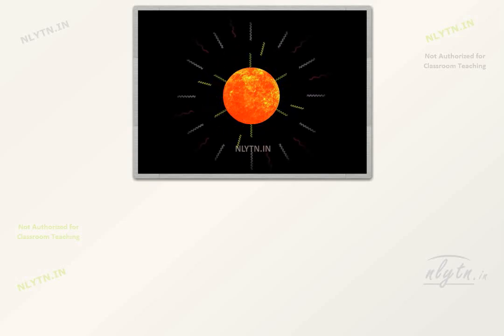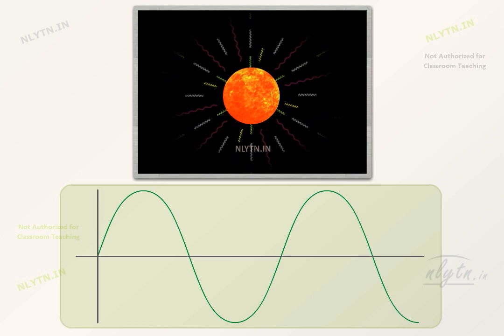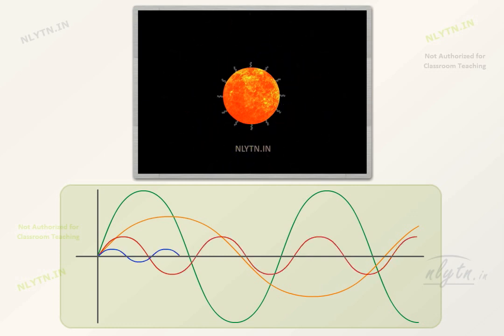We have discussed that every object above 0 kelvin emits thermal radiations in the form of electromagnetic waves. And these radiations do not happen at a single wavelength. Instead, the radiation consists of waves of all wavelengths, ranging theoretically from 0 to infinity.